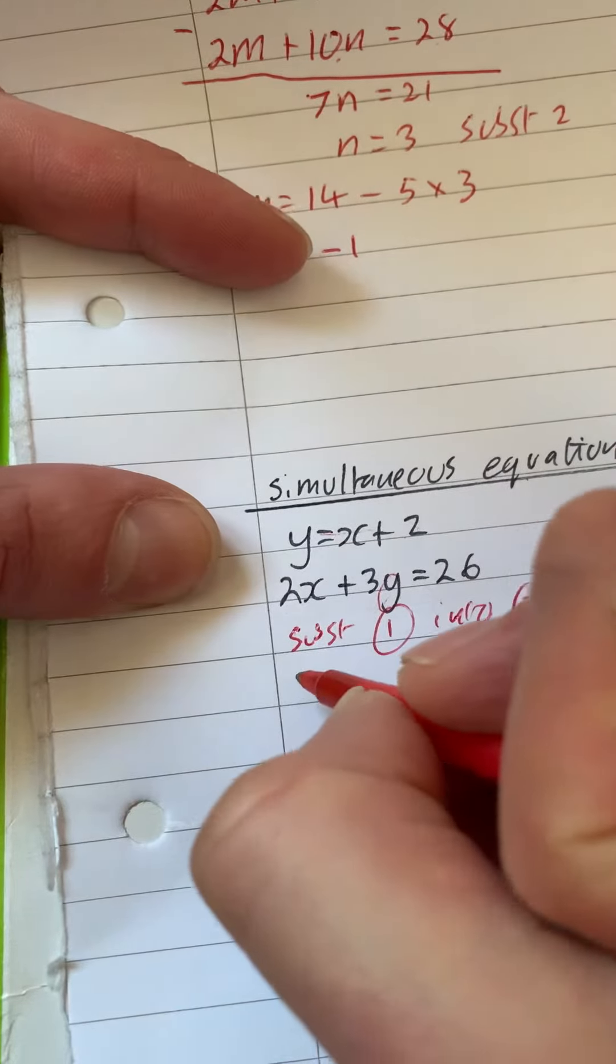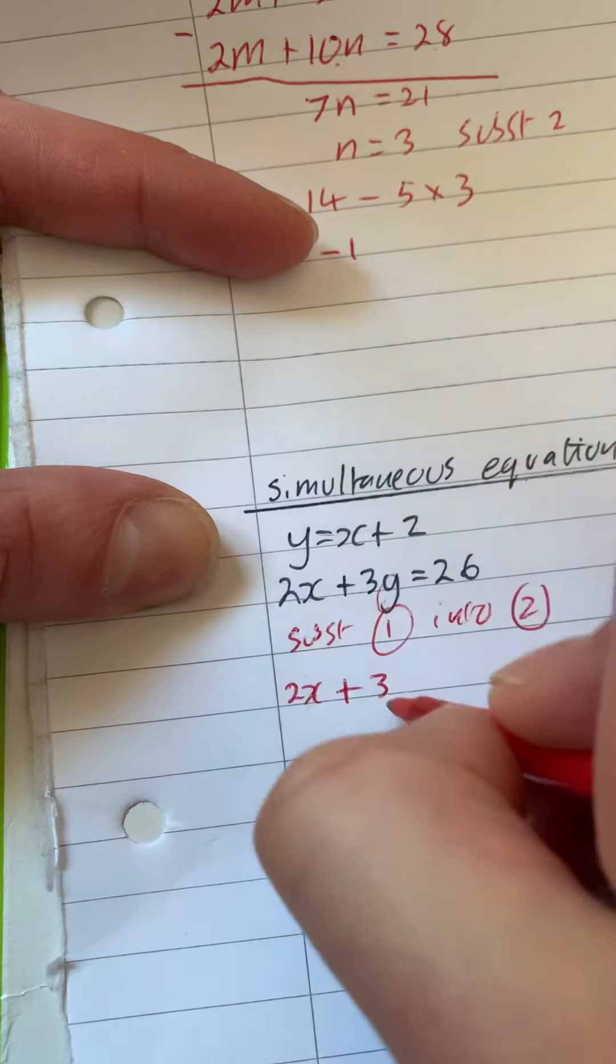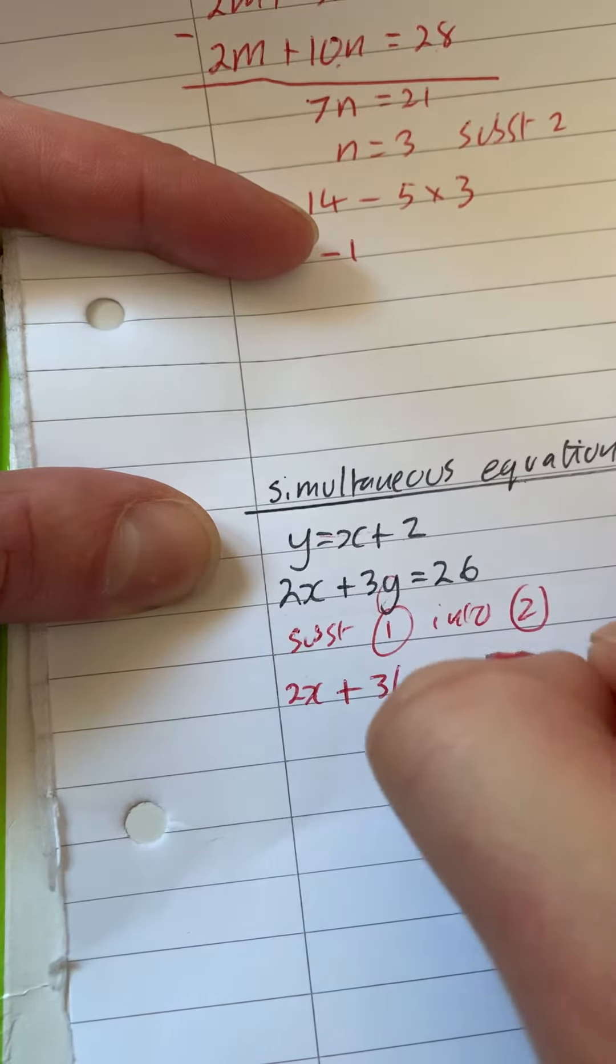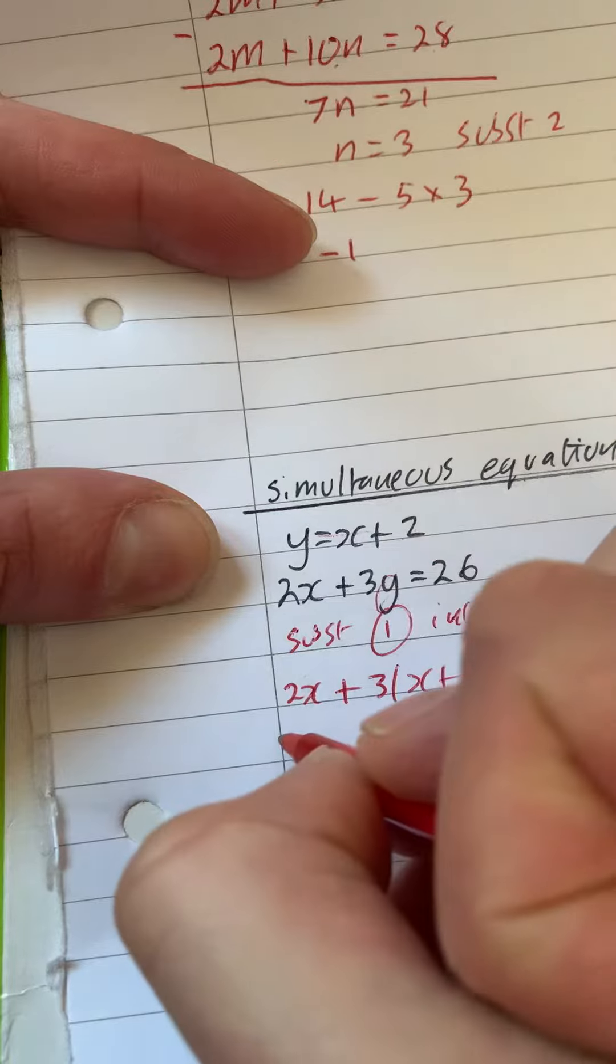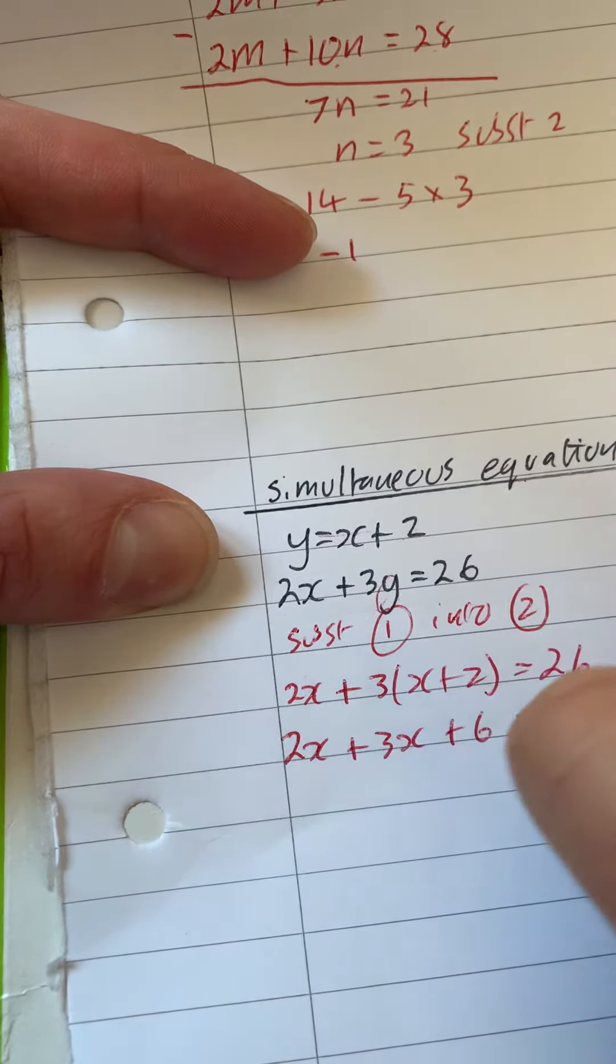So we're going to have 2x plus 3, and instead of y, our y is x plus 2, and that is equal to 26. So we've got 2x. Expand this bracket: 3x add 6 is equal to 26.